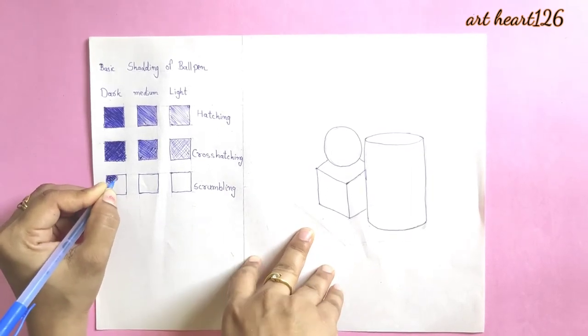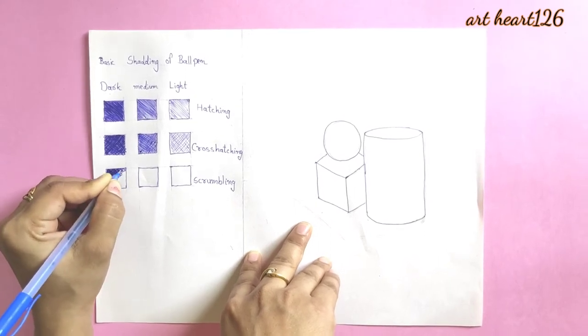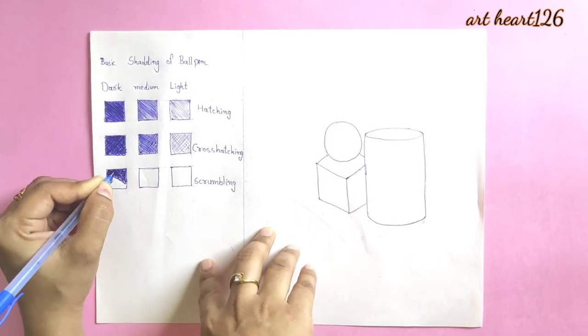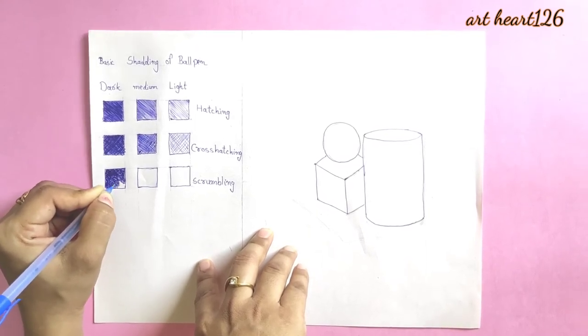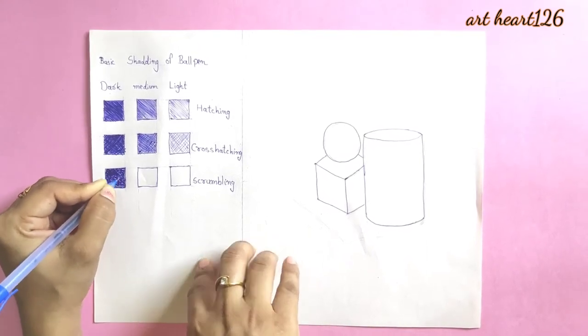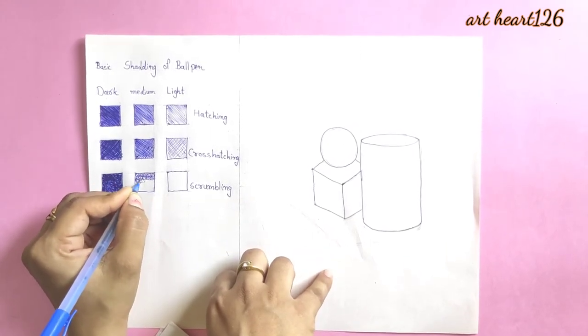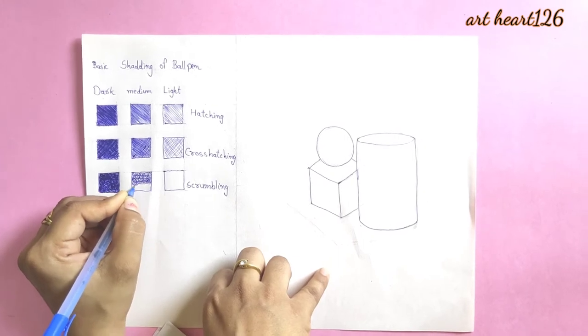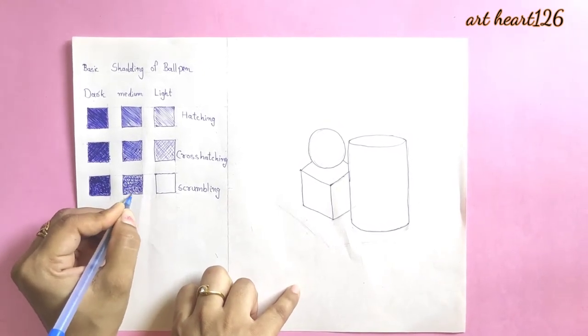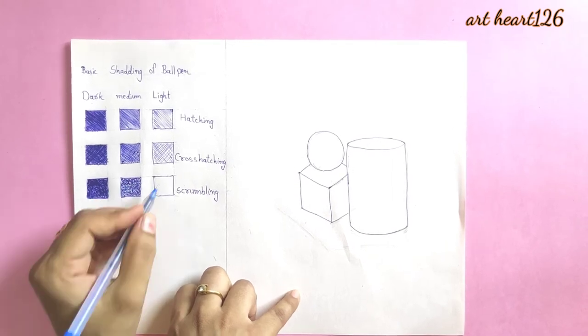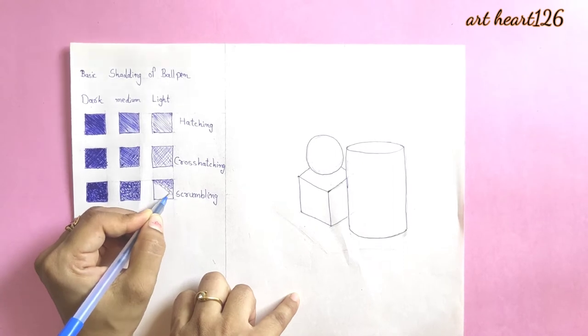Now let's do scrambling. For doing dark tone, use pressure and draw uneven lines with the flow. For medium tone, use medium pressure. For light tone, don't give any pressure - go with the flow.